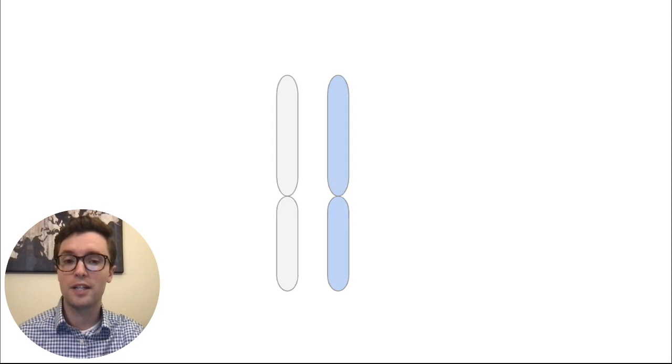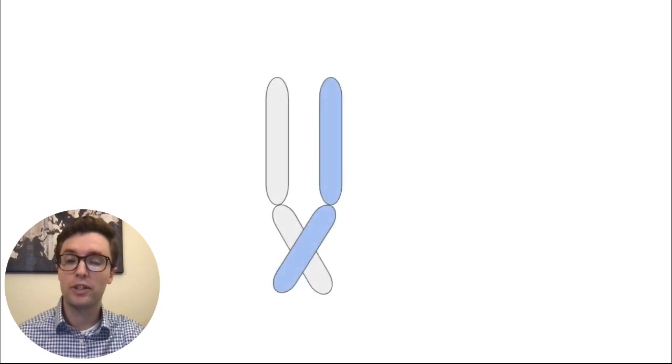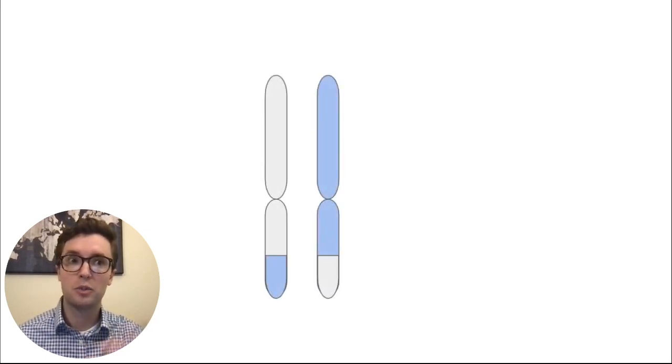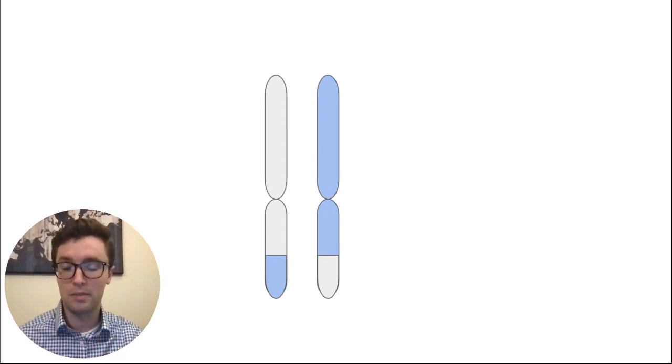We know that during cell division, it is possible for these chromosomes to quite literally cross over on top of each other. And when this occurs, there can be a switching or a swapping of the genetic material on each of these chromosomes to the opposite chromosome.